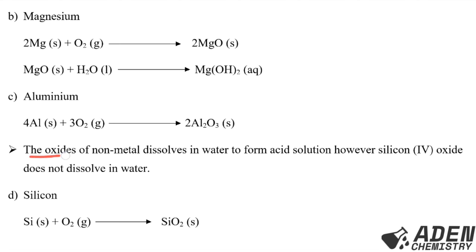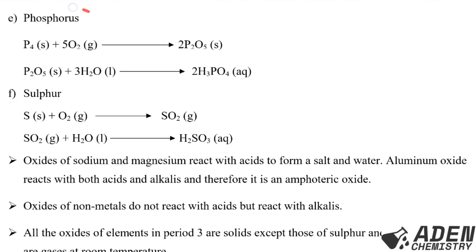Next, we are going to the oxides of non-metals - we say they dissolve in water to form acidic solutions. However, silicon dioxide does not dissolve in water. After aluminium we go to silicon: silicon reacts with oxygen gas giving us silicon dioxide, but silicon dioxide does not dissolve in water. After silicon we have phosphorus, which reacts with oxygen gas giving us phosphorus 5 oxide.